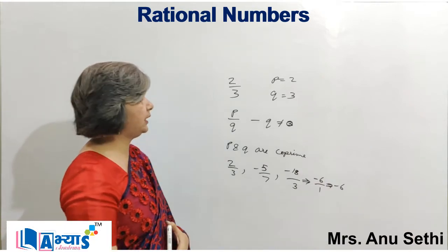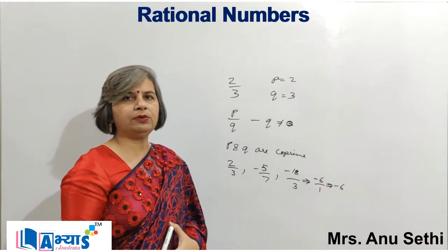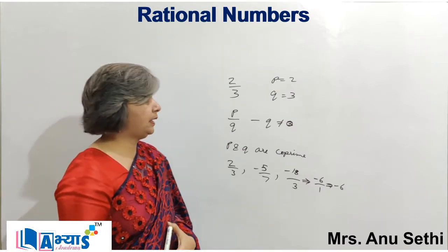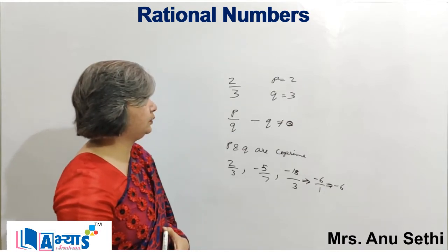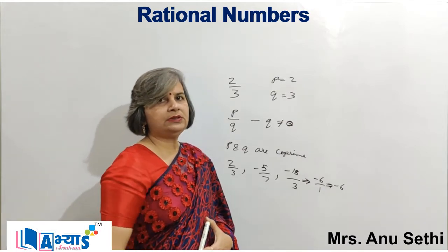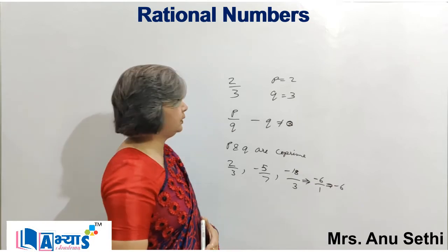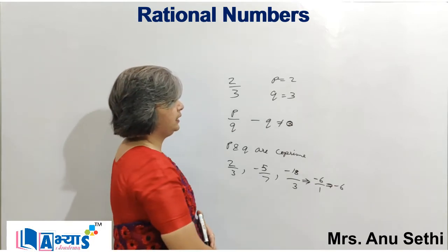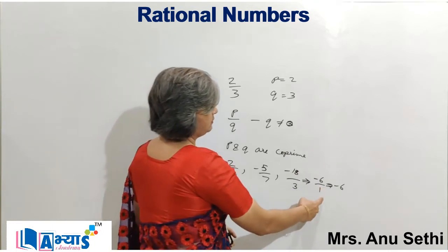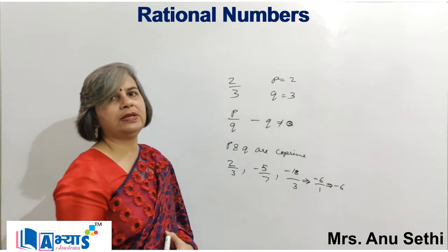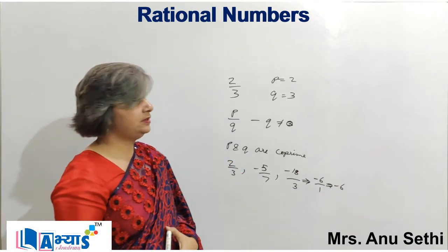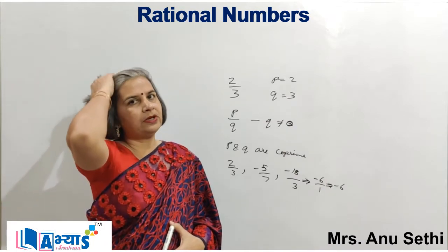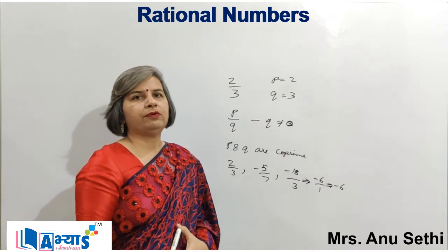In the case of minus 18 by 3, it is a rational number because it can be represented in the form of p by q, where p is minus 18 and q is 3. But it is not in the simplest form because 18 and 3 have a common factor that is 3. On simplifying, we get minus 6 by 1, which equals minus 6. Hence, minus 6 is a rational number in the lowest form.